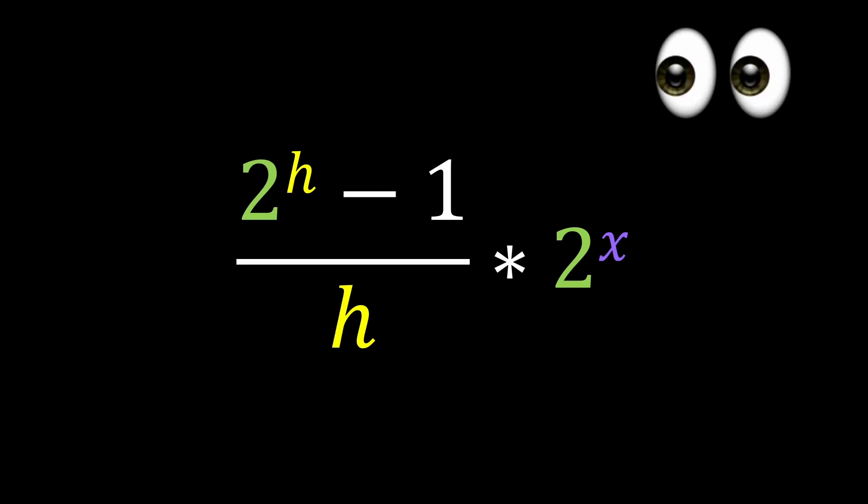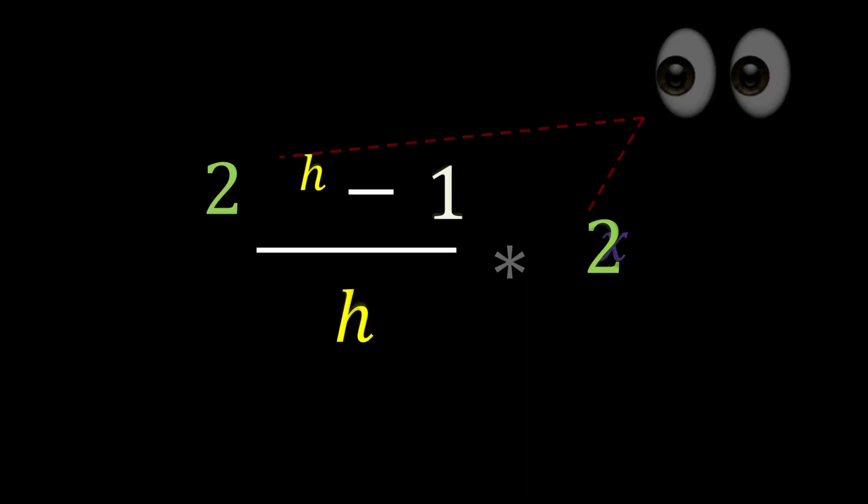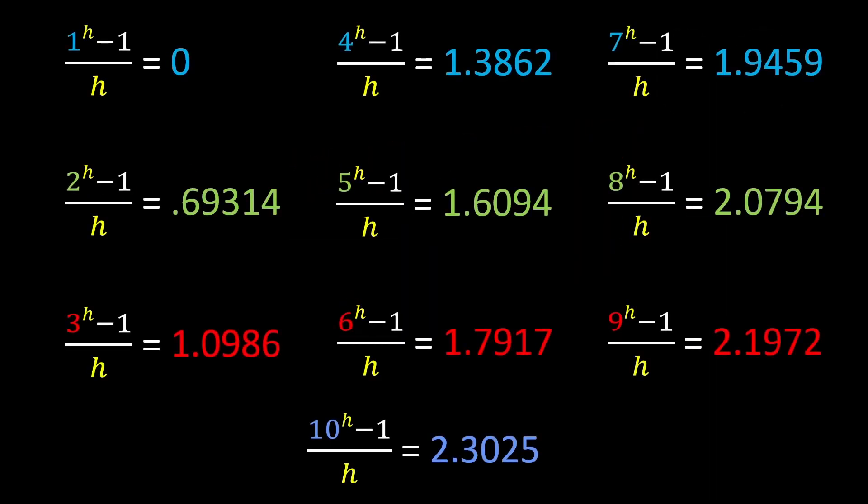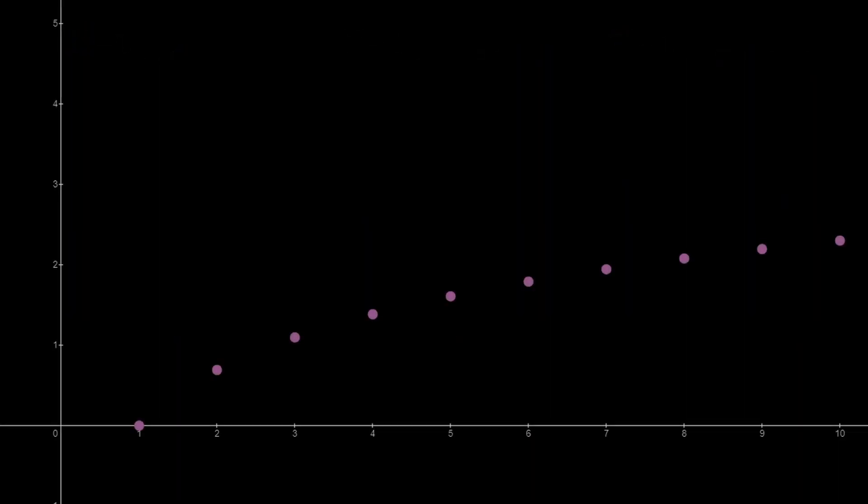If you have keen eyes, you might recognize that this constant is determined by the base of our exponent. To show you what I mean, this is what the growth constant looks like for the numbers 1 through 10. And here's what they look like on a graph, where they seem to taper off as the number increases.